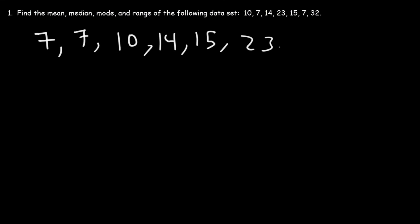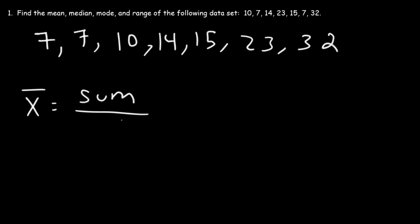23 and 32. Now to calculate the mean, what we need to do is take the sum of the seven numbers and divide it by the seven numbers that are in the data set. So this is going to be 7 plus 7 plus 10...